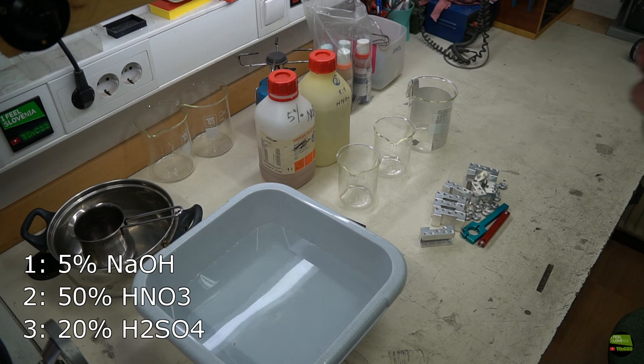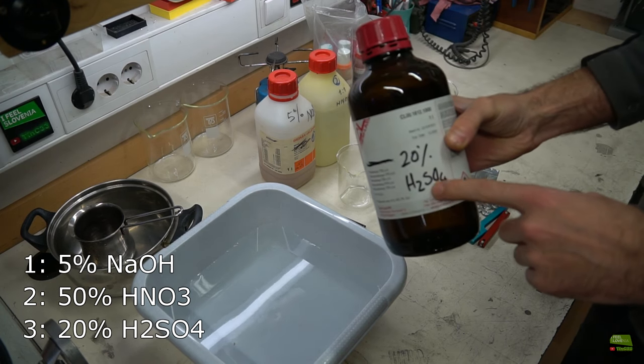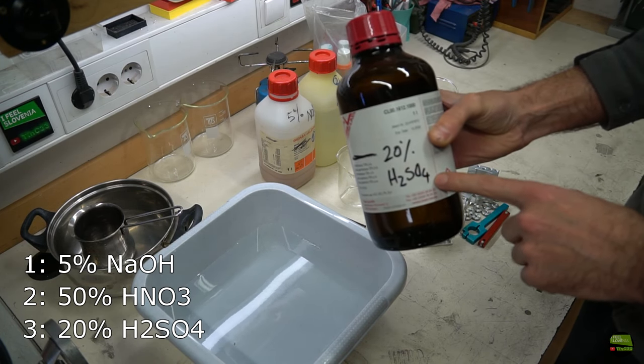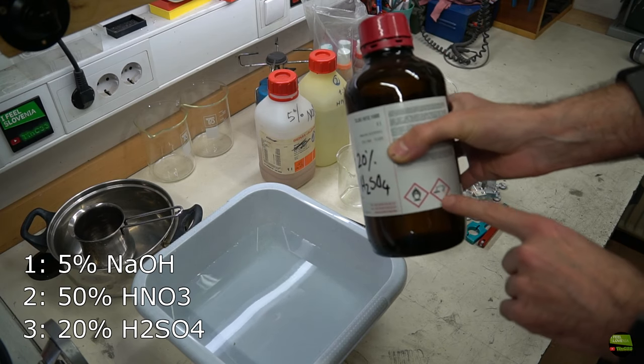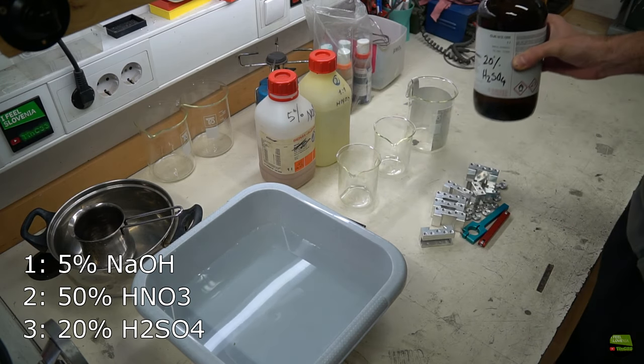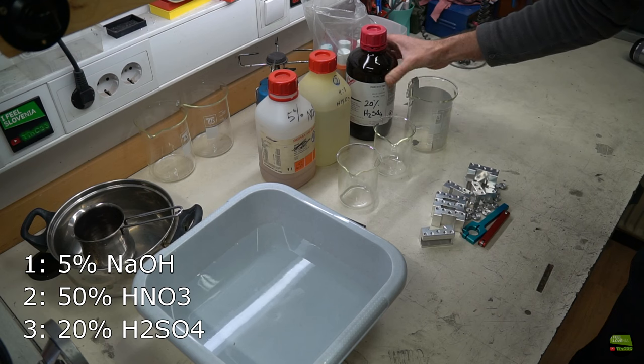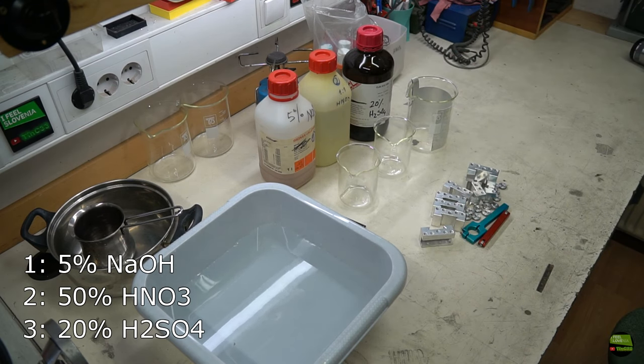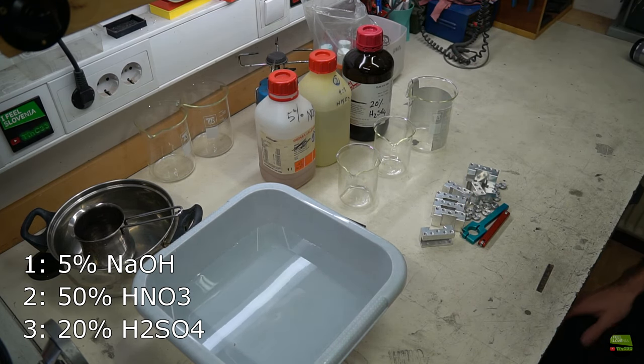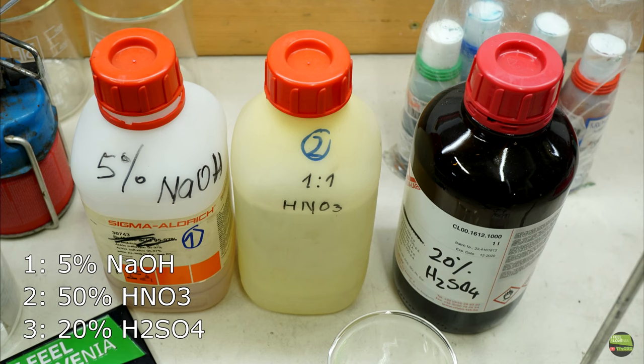H2SO4 can be a bit harder to get. I already have mixed acids here, so if you buy 100% acid you'll need to mix with distilled water. And remember the AAA rule: Always add acid into water and no water into acid. Sodium hydroxide is 5% solution, nitric acid is 50% solution, and sulfuric acid is 20% solution.